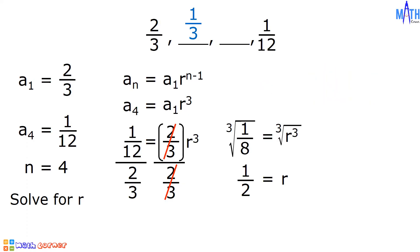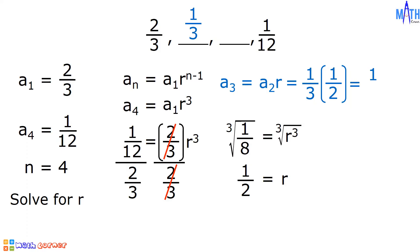To find the third term, we will multiply the second term by r. The second term is 1/3 times r which is 1/2. 1 times 1 is equal to 1, and 3 times 2 is equal to 6. The third term is 1/6. And the two geometric means between 2/3 and 1/12 are 1/3 and 1/6.